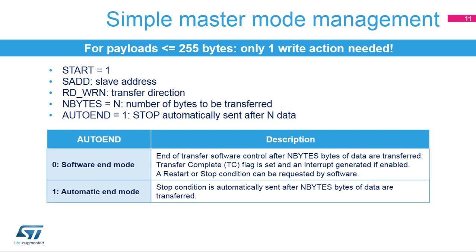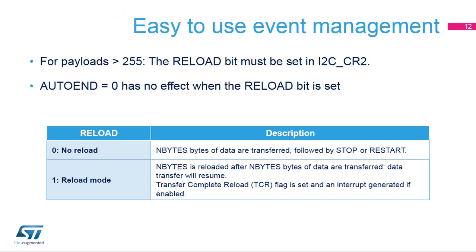The data transfer can be managed by interrupts or by the DMA. When the payload is greater than 255 bytes, the reload bit must be set in I2C control register 2. In this case, the transfer complete reload (TCR) flag is set after the programmed number of bytes has been transferred, and the additional bytes to be transferred are programmed when the TCR bit is set. The I2C clock is stretched low as long as the TCR bit is set. The reload bit is used in master mode for payloads greater than 255 bytes, and in slave mode when slave byte control is enabled. When the reload bit is set, the auto end bit has no effect.